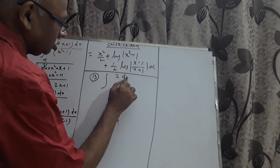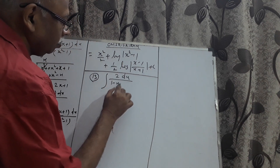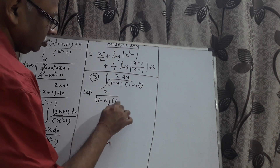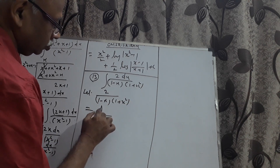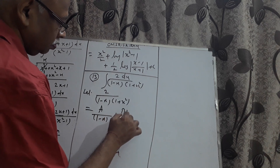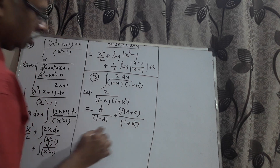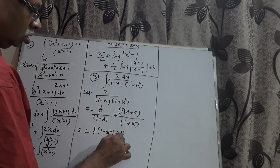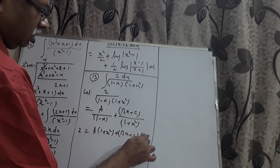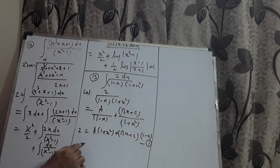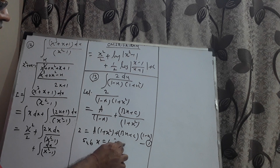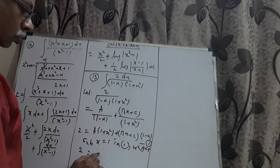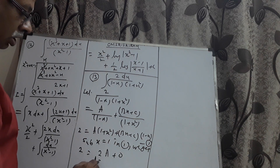The next problem is ∫2 dx / [(1 - x)(1 + x²)]. Let 2 / [(1 - x)(1 + x²)] = A/(1 - x) + (Bx + C)/(1 + x²). Then 2 = A(1 + x²) + (Bx + C)(1 - x). Substituting x = 1, we get 2 = 2A, so A = 1.